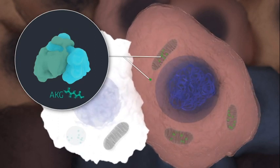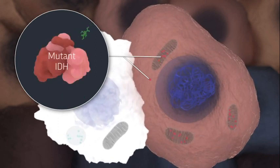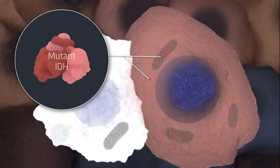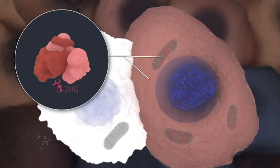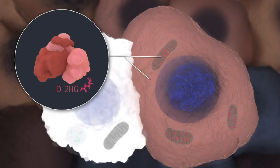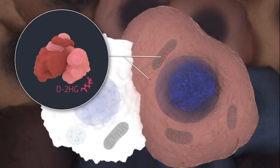However, some cancers have a mutation in IDH that causes cancer cells to begin making a metabolite called D2HG, not normally found in the human body.